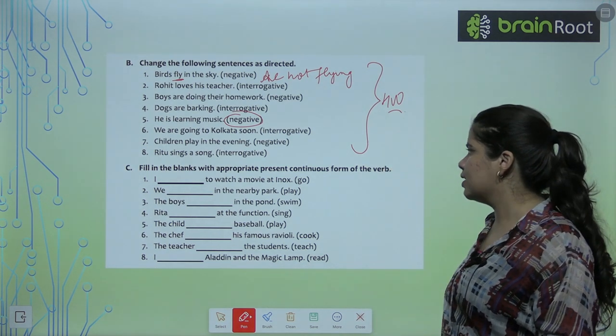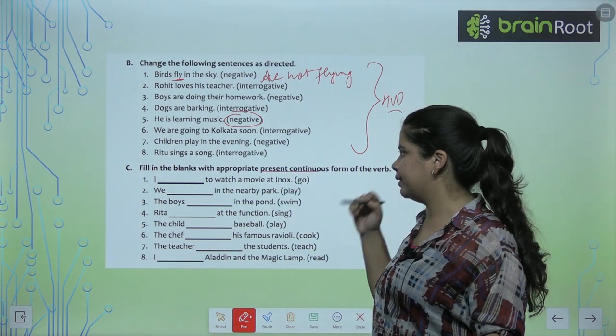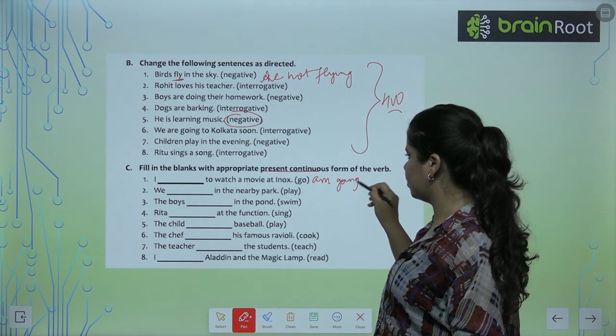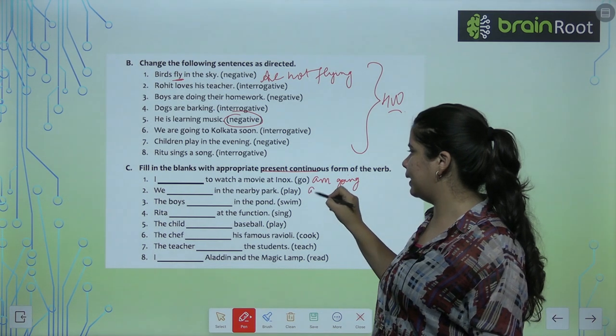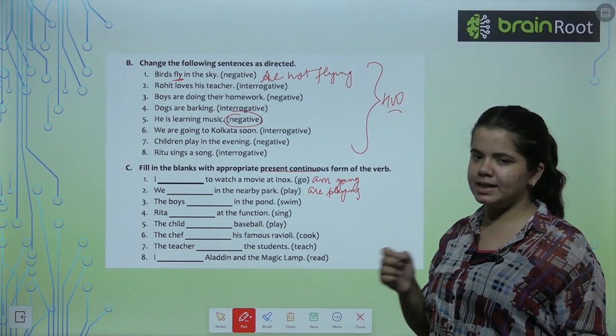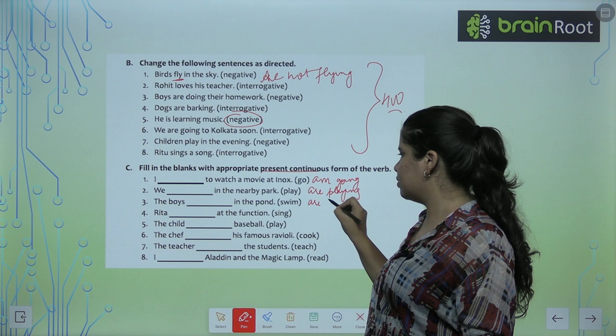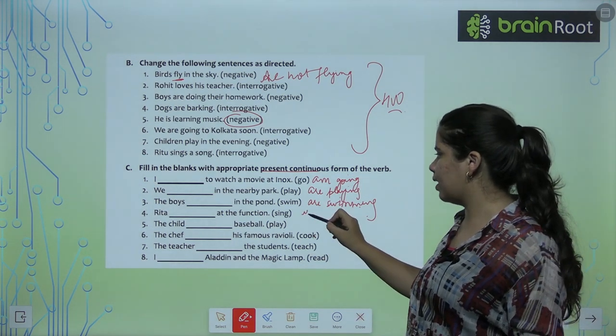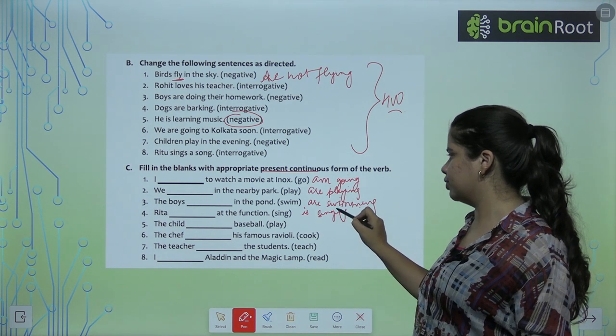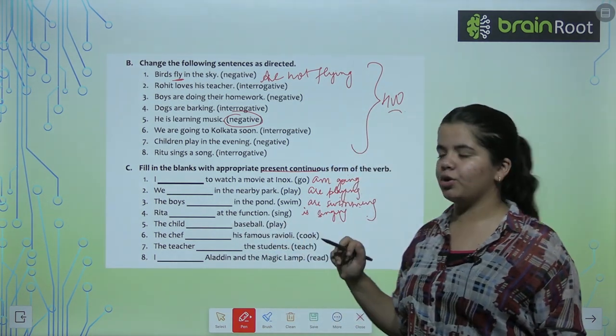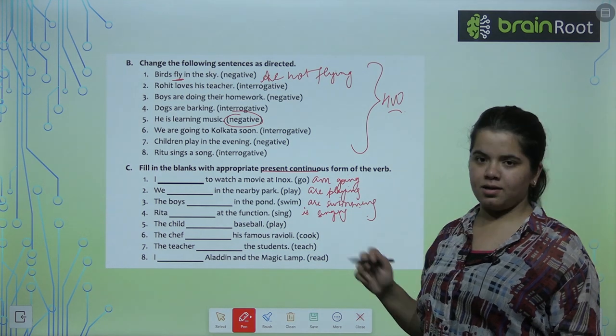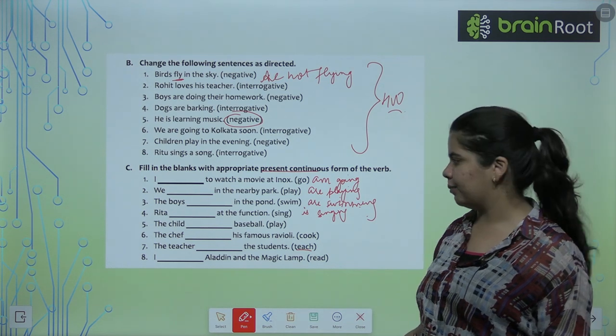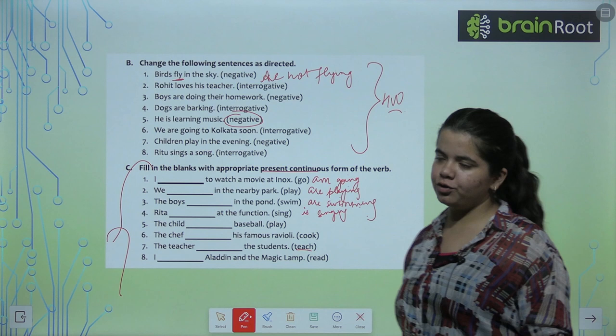Now fill in the blanks with appropriate present continuous form of the verb. I am going to watch a movie at Inox. We are playing in the nearby park. You will understand. Continuous tense is very easy to understand. The boys are swimming in the park. Please make sure that you use the same verb that you give in brackets.